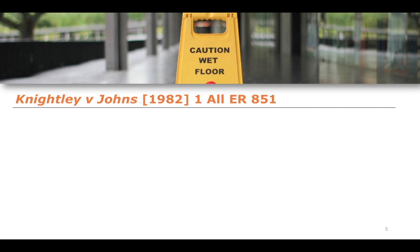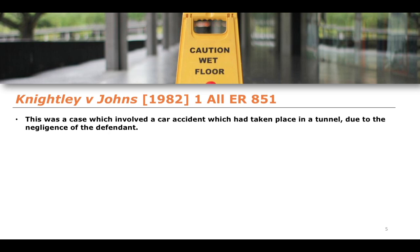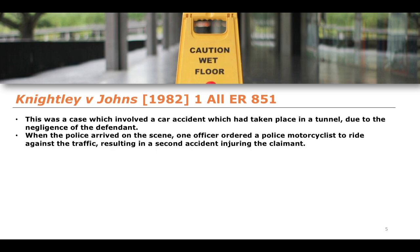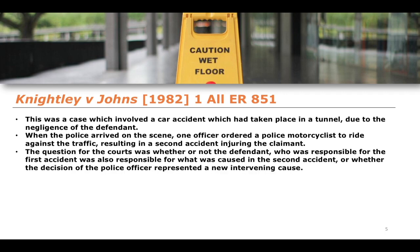A better example is the 1982 case of Knightley v Johns. This involved a car accident which had taken place in a tunnel — the result of negligent action on the part of the defendant. When the police arrived at the scene, one police officer ordered a police motorcyclist to ride against the traffic, resulting in a second accident injuring the claimant. This was a seemingly very poor decision on the part of the police officer. The question for the courts was whether the defendant responsible for the first accident was also responsible for this second accident, or whether the police officer's order represented a new intervening cause.